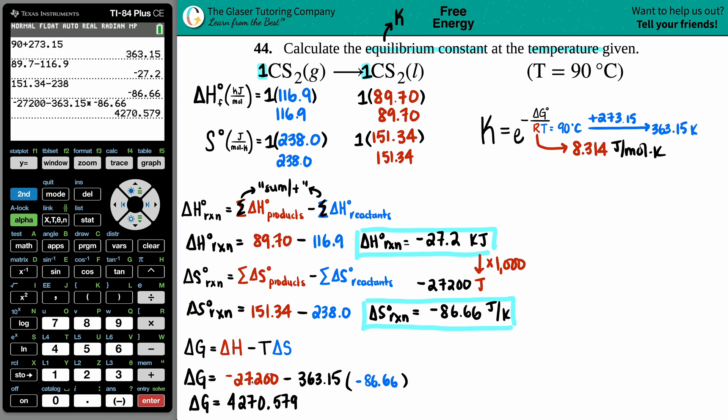And there we go - non-spontaneous, because it's a positive 4,270.579. Notice how I did not round because that's not the final answer. The K value is the rounding number, the one you're trying to solve for. This will be in joules, and now we finally have the link to get to this formula. The delta G is going to be 4,270.579 joules.